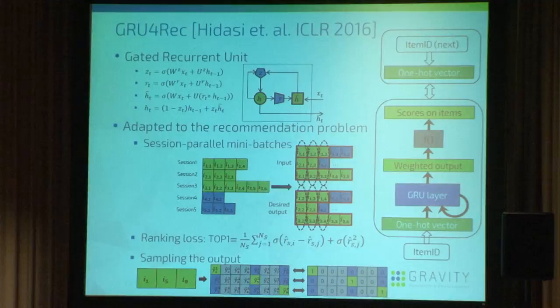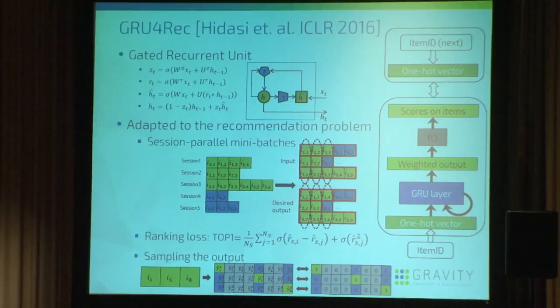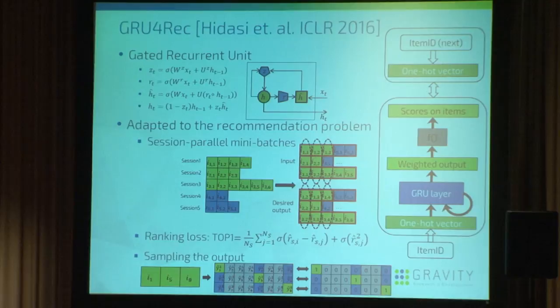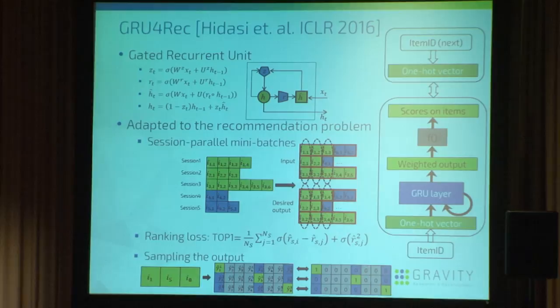You can see the basic GRU unit at the top of the presentation. What we basically did in this previous work is use a bunch of these units in a GRU layer, fed with a one-hot encoded item ID of the session. We computed scores on all possible items and compared them during training with the next item ID in the session — that's how we told the network to predict the next event. We also did session-parallel mini-batching, applied ranking loss because it's more appropriate for recommendation tasks, and sampled negative items on the output to keep the method scalable.